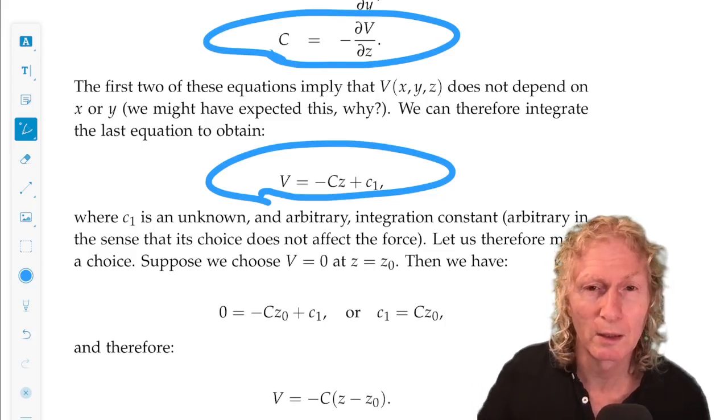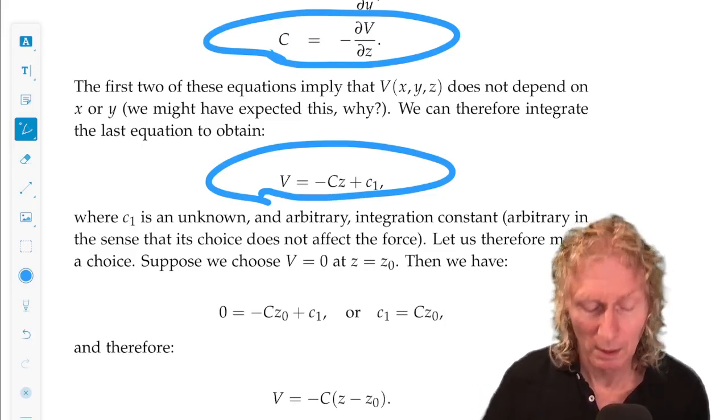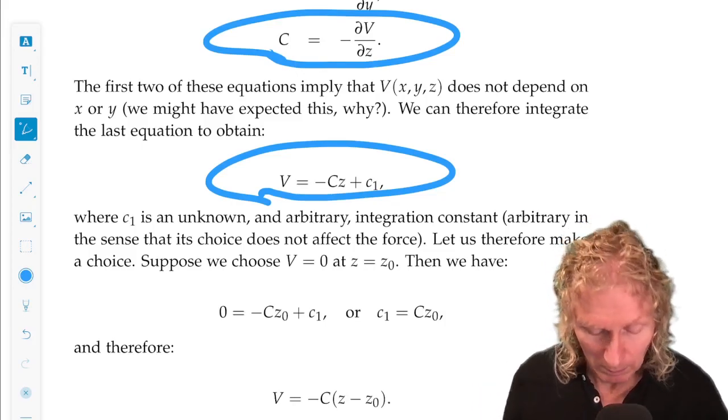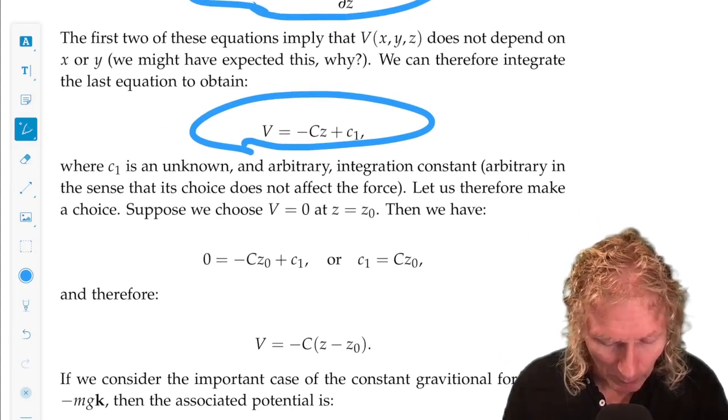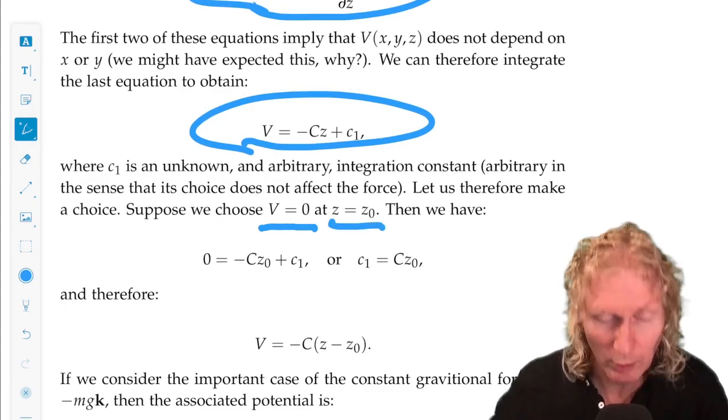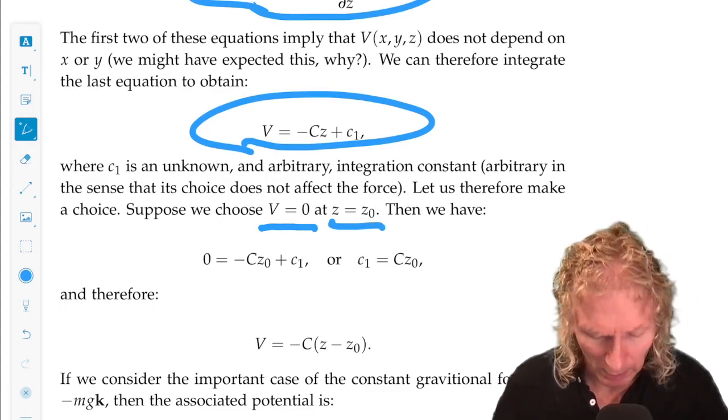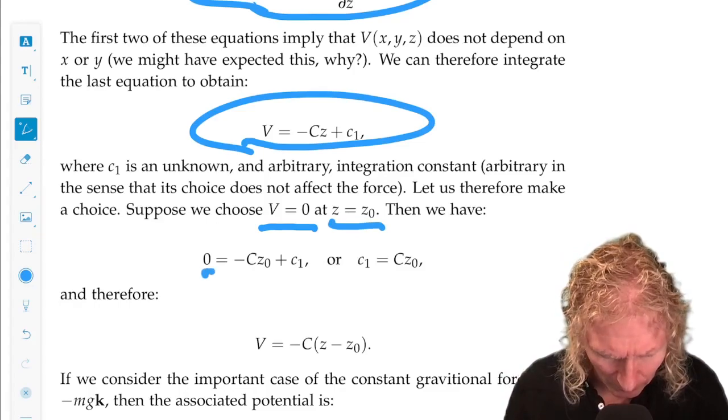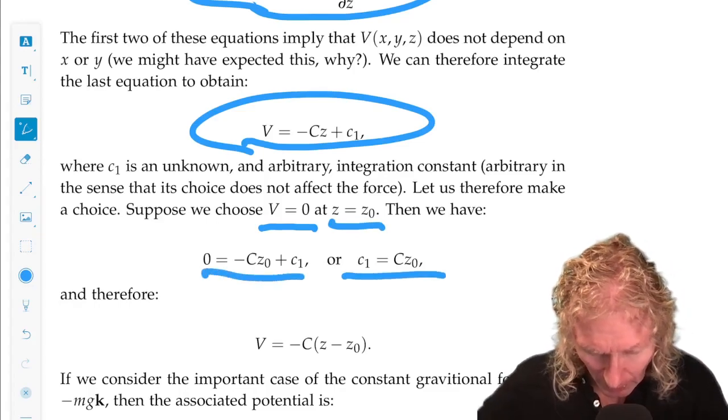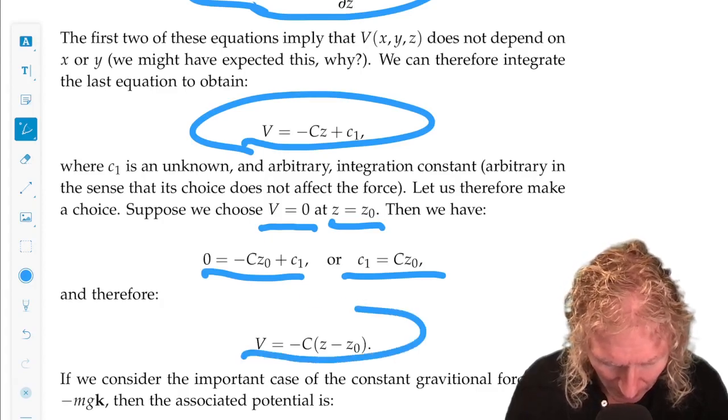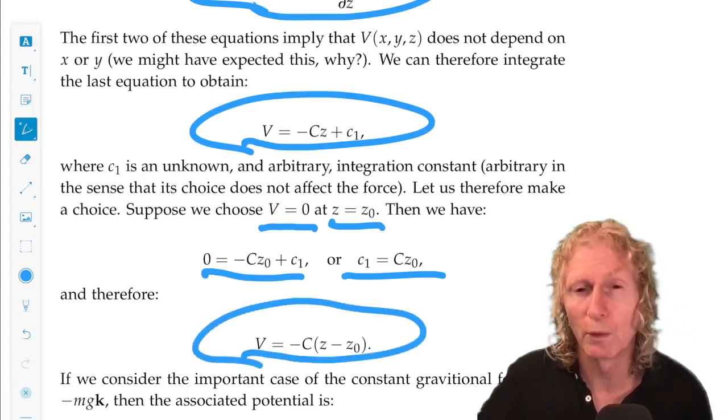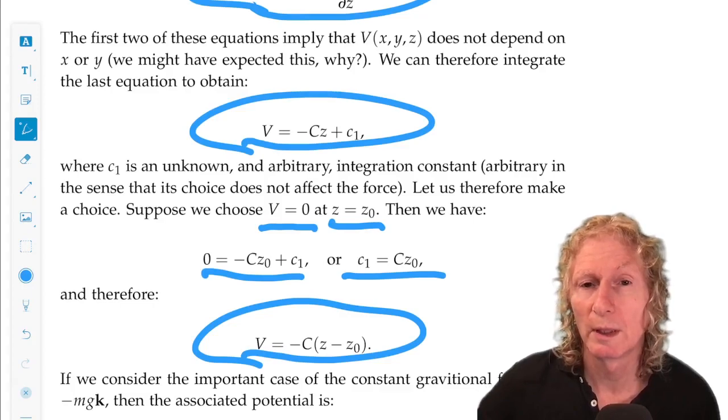But we can choose the constant to have some physical meaning and to be convenient for us. So let's suppose that V equals zero at a particular point, Z equals zero. In this case, we get CZ for the constant and we get this value for the potential energy function.